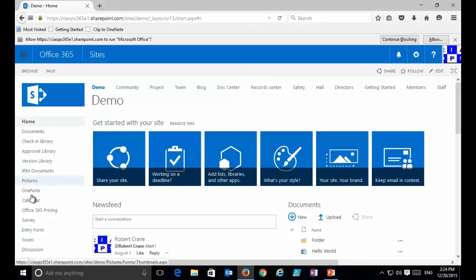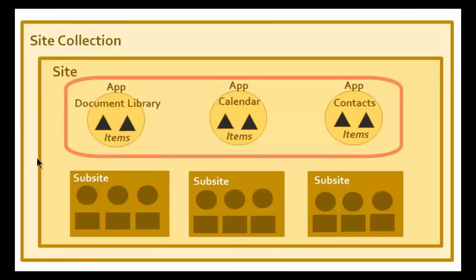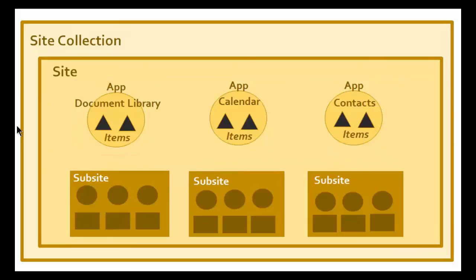So Demo is my top-level site in my site collection. Inside it I have a number of apps — calendars, contacts, picture libraries — and also a number of subsites that continue the structure below. Inside our site we can have apps such as document libraries, calendars, and contacts. Inside those apps are individual items such as files, appointments, and contacts. We can also create subsites which continue the structure further.